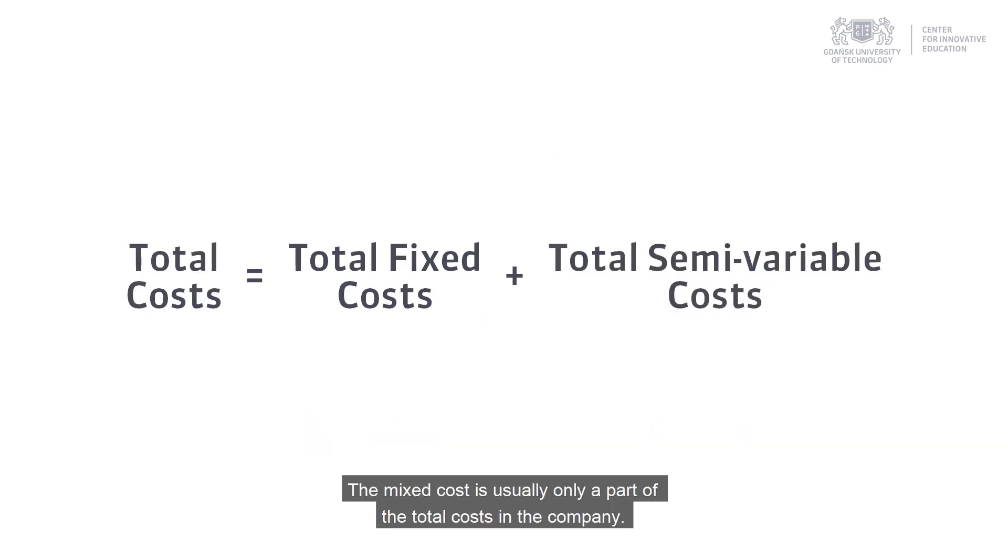The mixed cost is usually only a part of the total cost in the company. It means there are other fixed costs as well. Therefore the formula for total costs in the company will look like this.